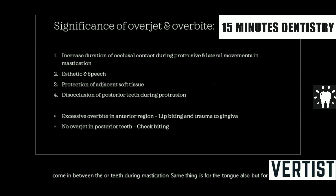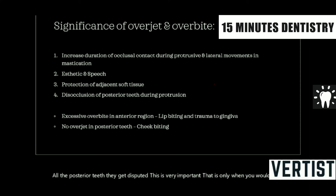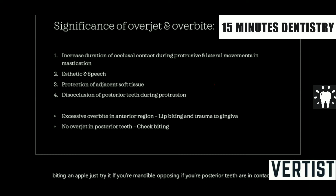Overjet and overbite also play one very important role: whenever the incisors come in contact with each other, especially during the protrusive movement, all the posterior teeth get discluded. This is very important — that is only when you will be able to take a bite of something. Whenever you are biting an apple, if your mandibular posterior teeth are in contact with each other, you won't be able to bite. So to have that scissor-like action, they have to be discluded.